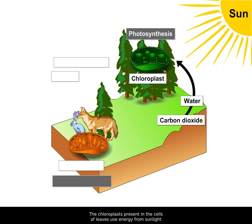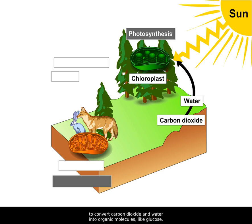The chloroplasts present in the cells of leaves use energy from sunlight to convert carbon dioxide and water into organic molecules like glucose. The process also releases oxygen into the environment.